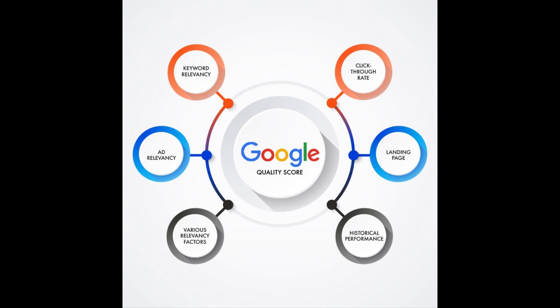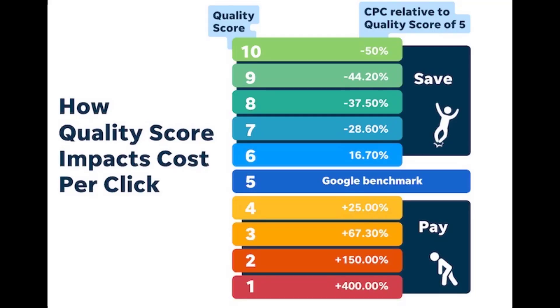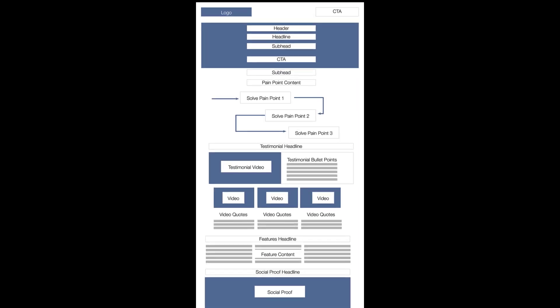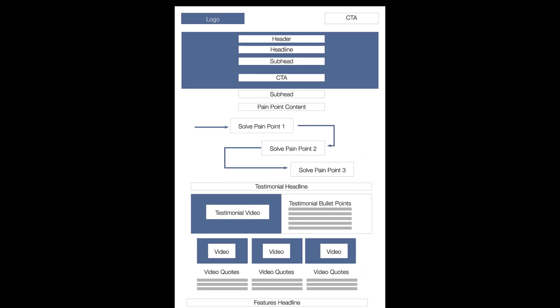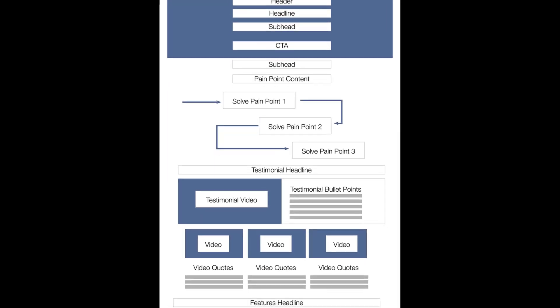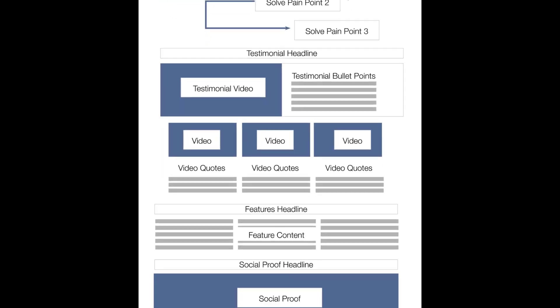Advertising platforms use a similar SEO algorithm to determine your quality score — an arbitrary score given to each page based on how it relates to the keyword. This helps advertising platforms keep irrelevant information off certain searches, but it also allows them to artificially inflate the price of a click. The code structure for this type of page is similar to the SEO structure, with a few major differences.